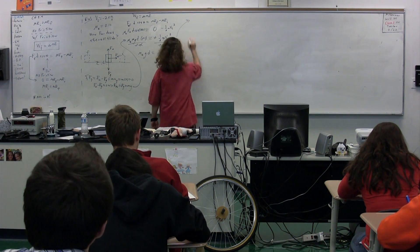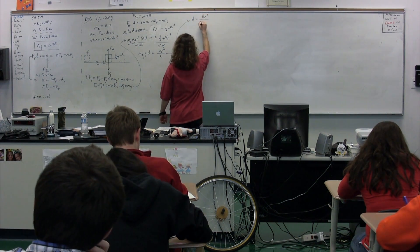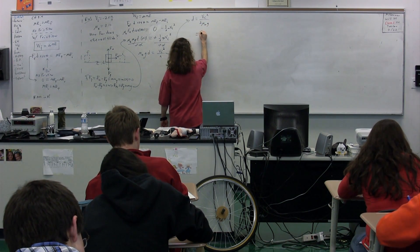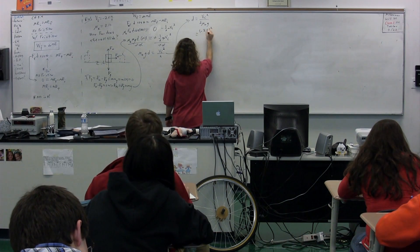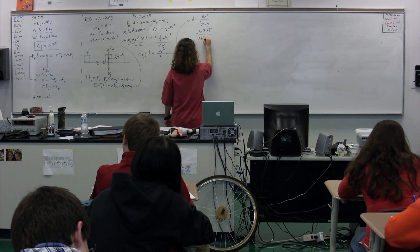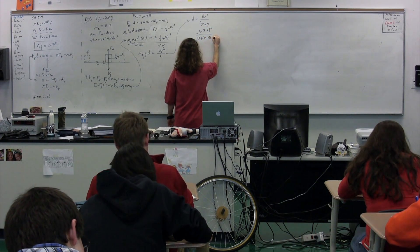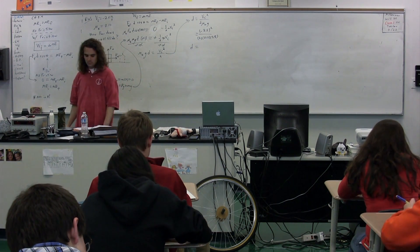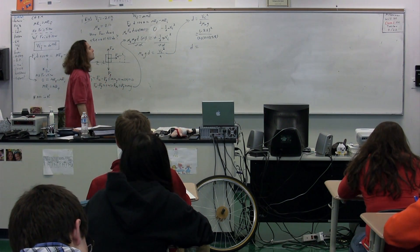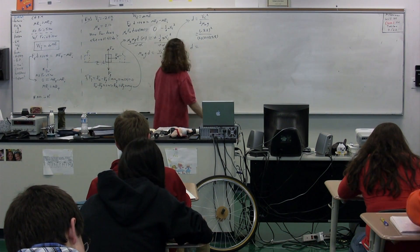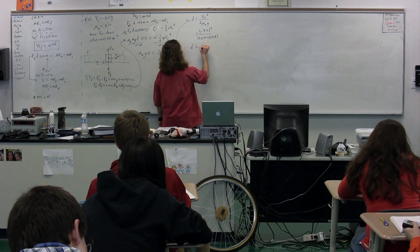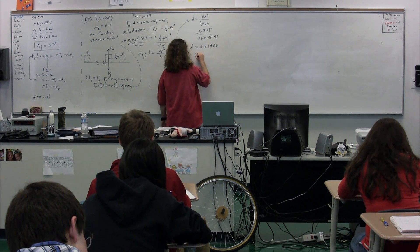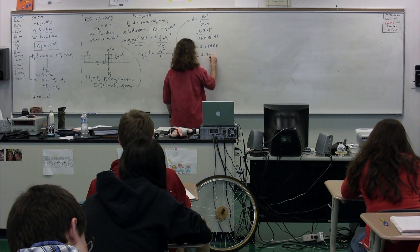Our goal is to solve for d. So d is equal to the velocity initial squared divided by 2 mu_k times g. We have all these numbers: negative 2.5 squared divided by 2 times 0.11 times g which is 9.8. 2.89888. With sig figs, 2.9 meters.